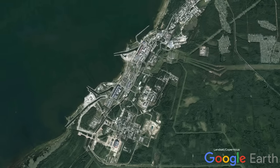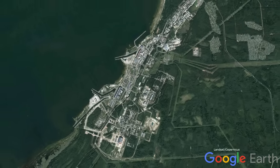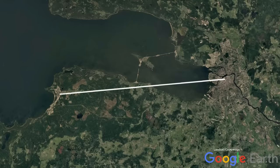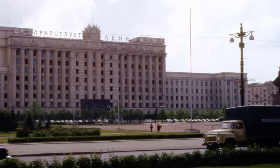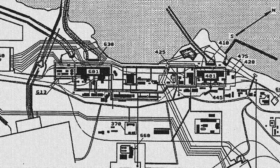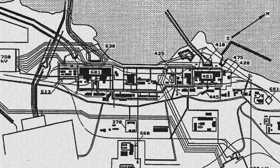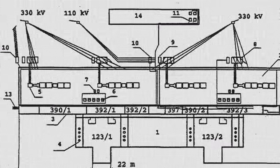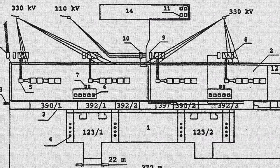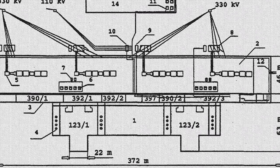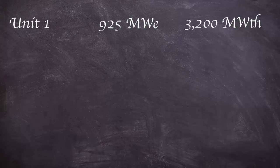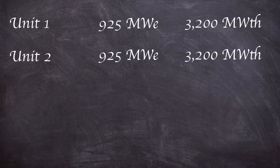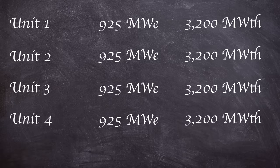Leningrad NPP is a nuclear power station in Sosnovy Bor, Leningrad Oblast, 43 miles west of modern-day Saint Petersburg. However, when the plant was first constructed, the city was actually called Leningrad. Construction began on the site in 1967 and was the first to use the ill-fated RBMK reactor design. Unit 1 first began operation in 1973, with units 2 to 4 opening in 1975, 1979, and 1981 respectively. Each installed reactor had the same net power output of 925 megawatts of electricity, however they produced much more in thermal energy.